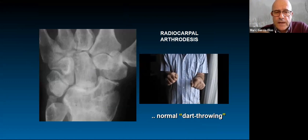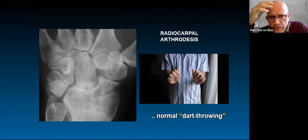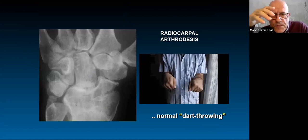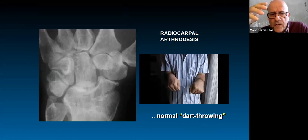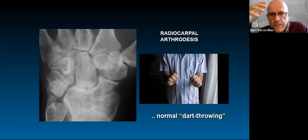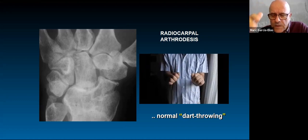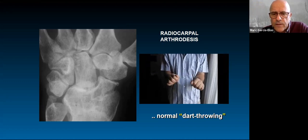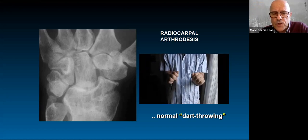Here is proof from a long-term patient of mine in whom I fused the radioscaphoid and had to resect the distal scaphoid. You couldn't tell which side was operated on because he achieved normal dart throwing motion, despite the fact that the radiocarpal joint was fused. This confirms that dart throwing motion is primarily mediated by the midcarpal joint.